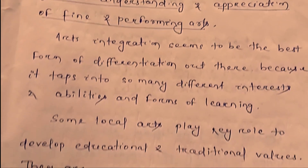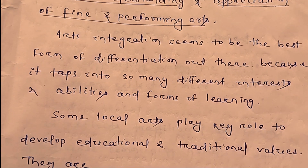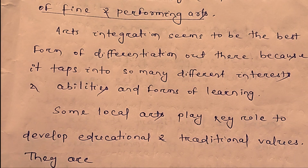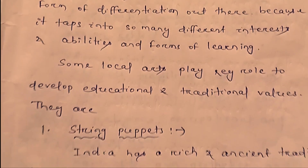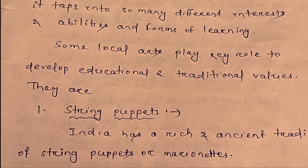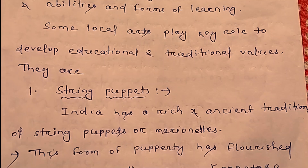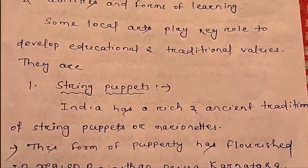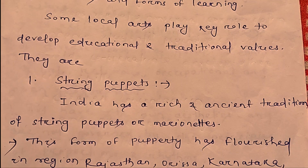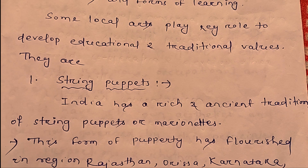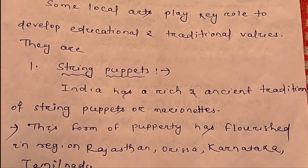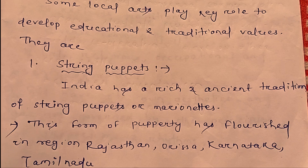Some local arts play a key role in developing educational and traditional values. In India, there is a rich and ancient tradition of string puppets and marionettes. This form of puppetry has flourished in regions such as Rajasthan, Orissa, Karnataka, and Tamil Nadu.